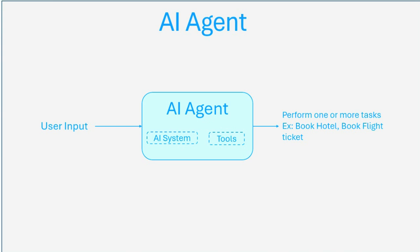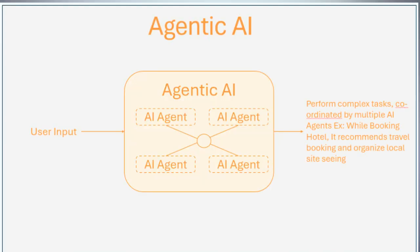Now let us take it one step further. Imagine after booking your hotel, the AI can also recommend local transport, plan sightseeing, or organize your entire trip. This is the power of Agentic AI — essentially multiple AI agents working together, coordinating among themselves to handle more complex tasks.